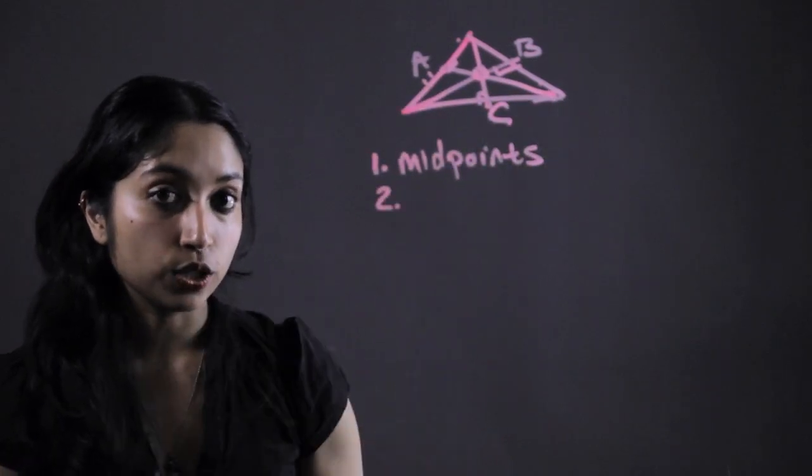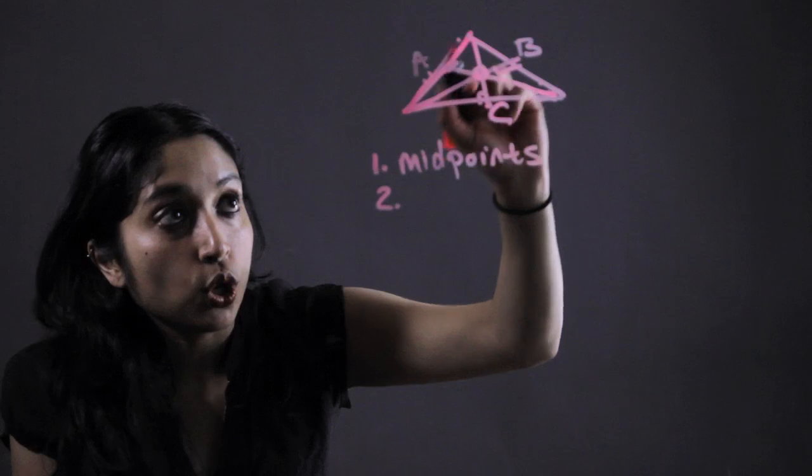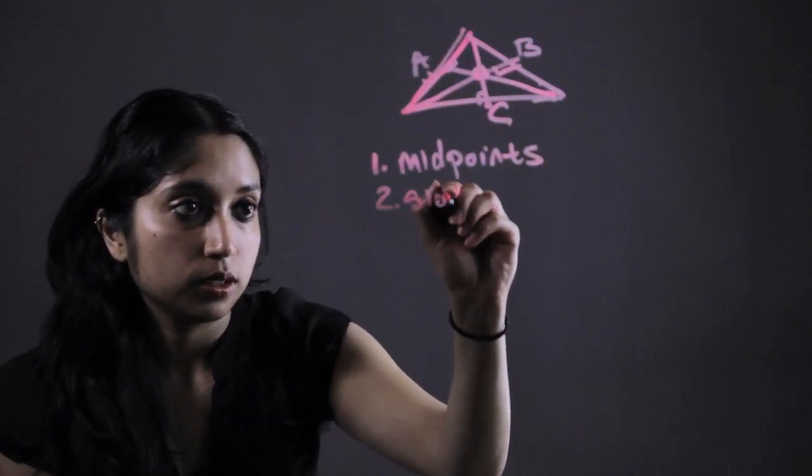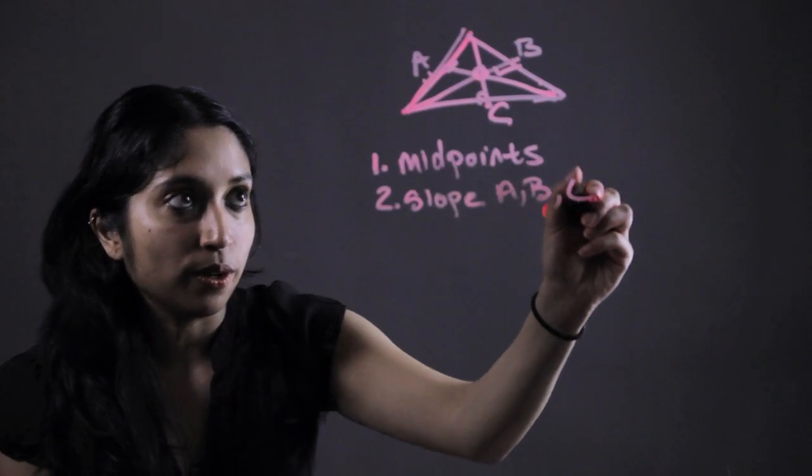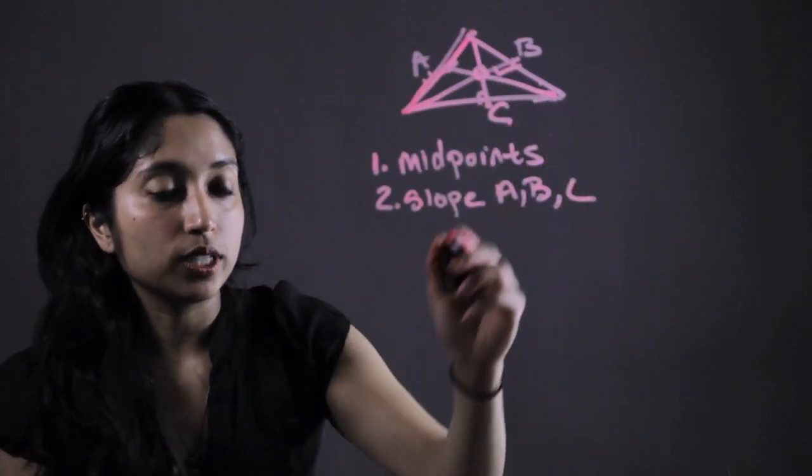Second, we're going to find the slope of sides A, B, and C, which we can do because we know these three coordinates.